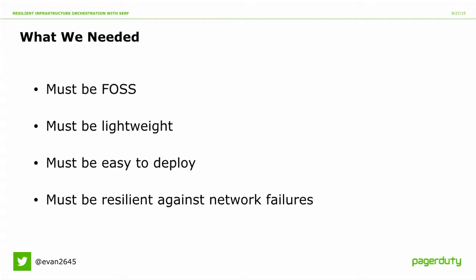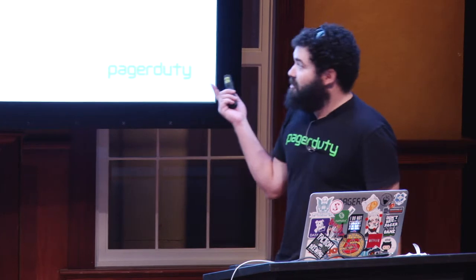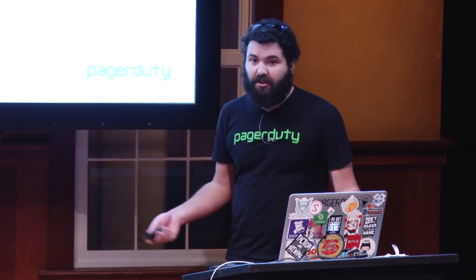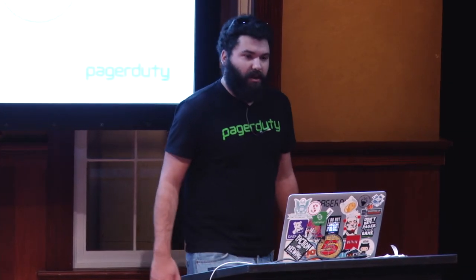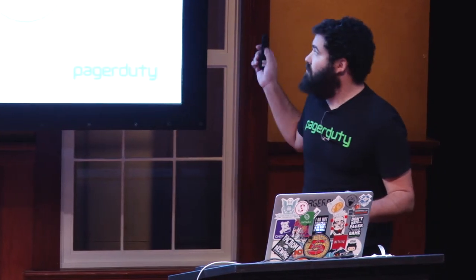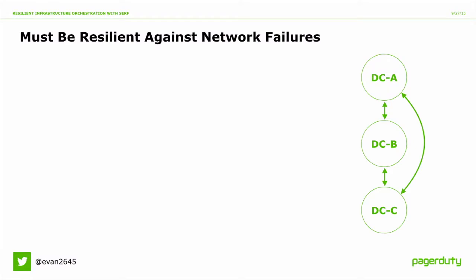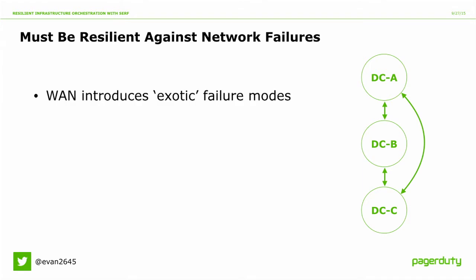What we're really looking for is a general purpose orchestration framework. It's got to be open source, lightweight, easy to deploy, and resilient against network failures — and that for PagerDuty is a really big deal. PagerDuty is striped across data centers across the WAN. We have three data centers with commodity internet in between, and lo and behold, commodity internet is just as unreliable as you might think.